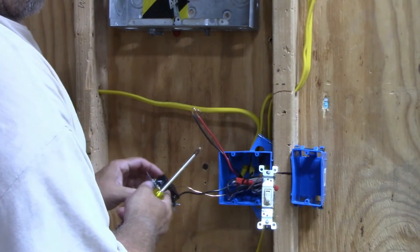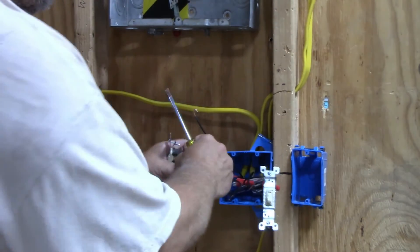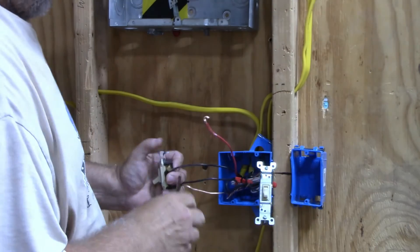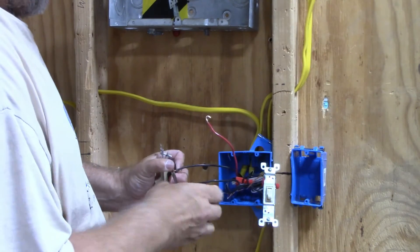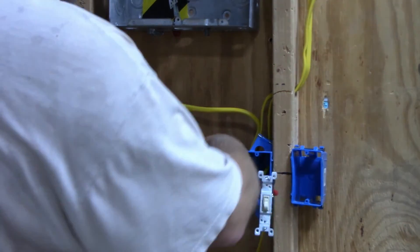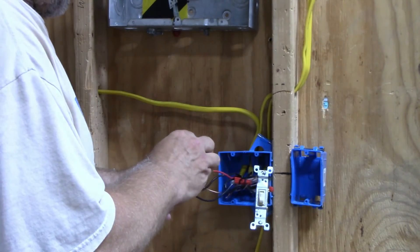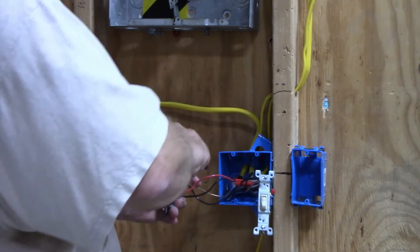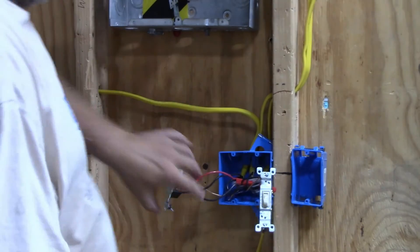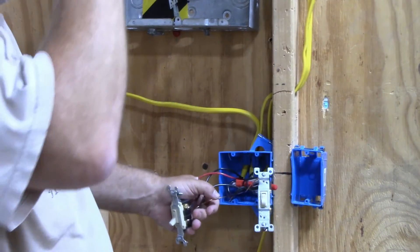The other two screws are the same color in this case. They're travelers, so it doesn't matter which side you put them on, as long as they're across from each other. That's how you wire two-gang boxes.